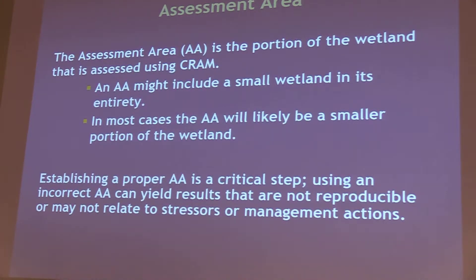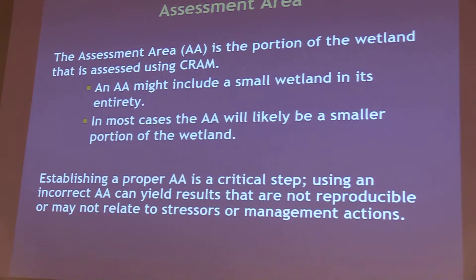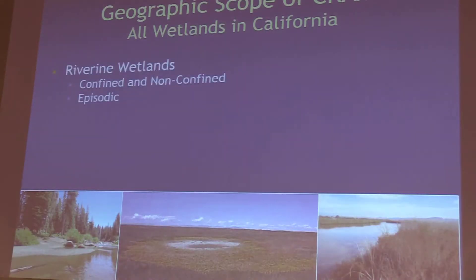The assessment area is really the footprint on the ground — the area the assessment pertains to. Sometimes you might have a really small wetland and the AA includes that entire wetland, but more often the AA is just a smaller portion of a much larger wetland. For instance, in a stream channel the AA might just be a small reach within a much longer stream course. Establishing a proper AA is a critical step, because using an incorrect AA can yield results that are not reproducible or may not relate to the stressors or management actions acting upon that wetland.